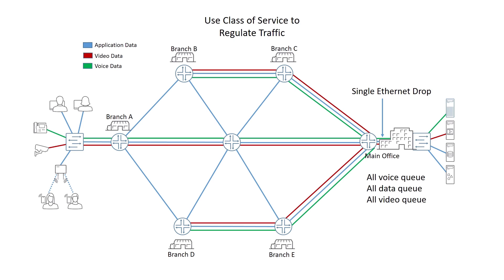If a single branch out of hundreds consumed a large portion of the outbound link, all branches would suffer. What complicated things even further was the fact that all of their communications were encrypted in IPsec tunnels, and the original classification of traffic was hidden under the IPsec encapsulation.